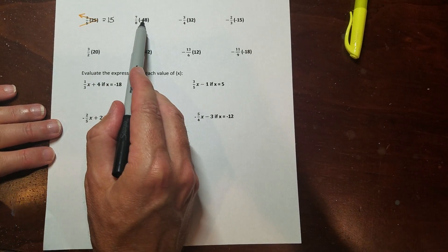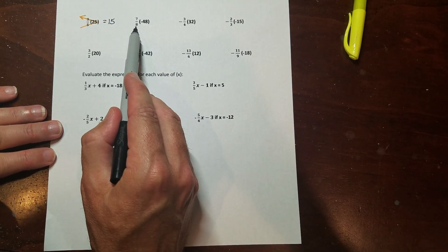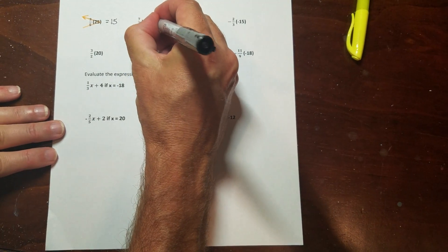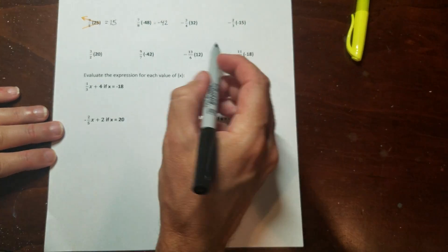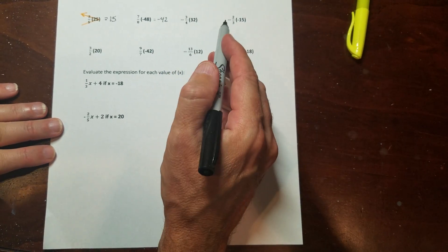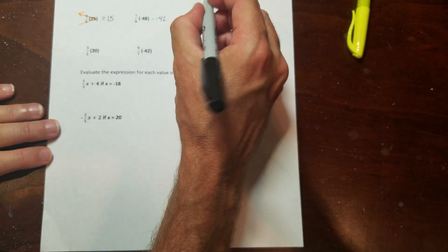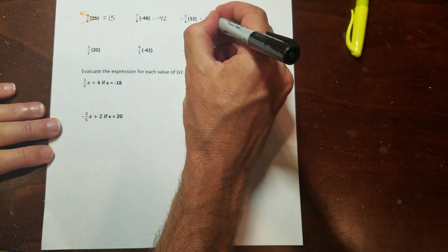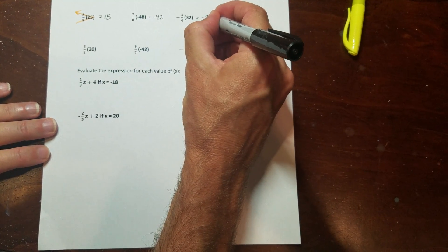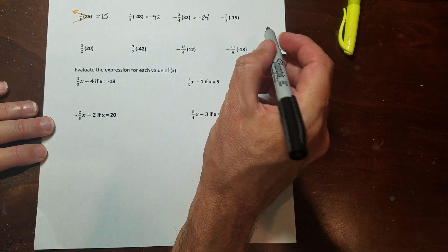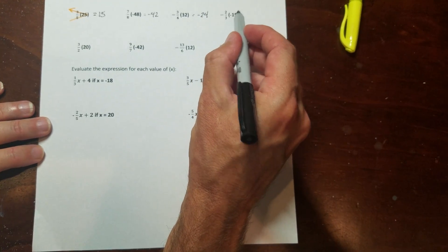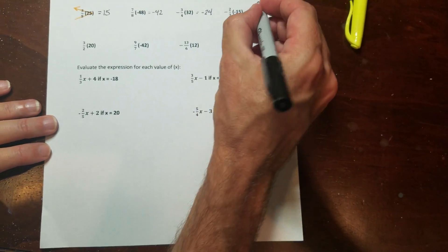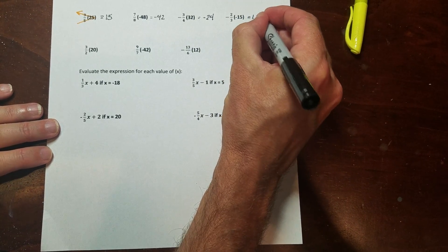So let's look at this one here. Negative forty-eight divided by eight is negative six. Negative six times seven is negative forty-two. Four goes into thirty-two eight times, eight times three is twenty-four. Now that's a negative there, so I've got to make sure I do a negative twenty-four. And then I've got three into fifteen here, which is five, five times two is ten, that's a negative and a negative, so that would be a positive ten.